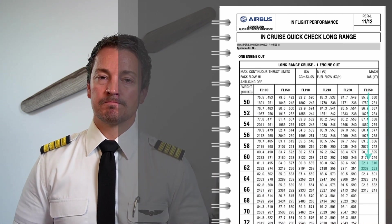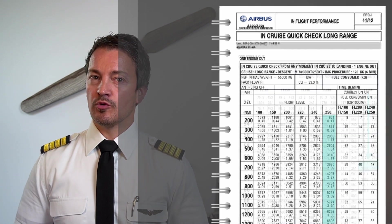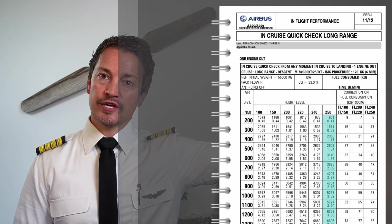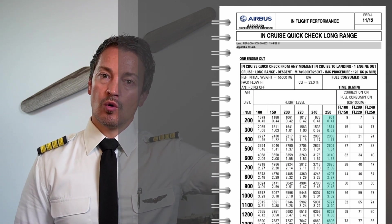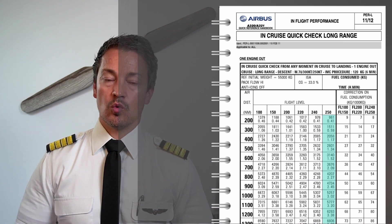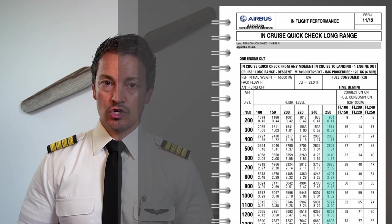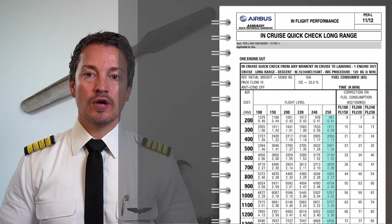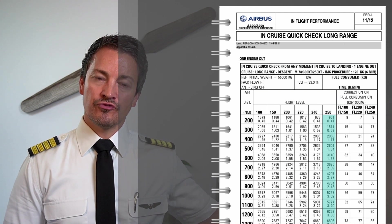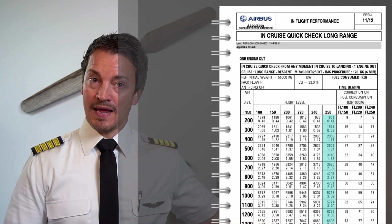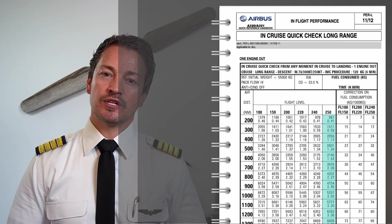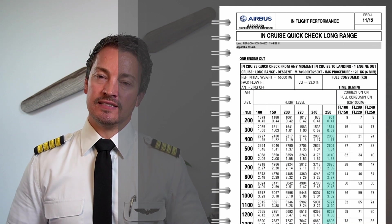Once I know the fuel burn per hour, I can jump to the next table — in-cruise quick check long range, one engine out — which tells me how long I can go with the fuel I have. Take the fuel on board, go to flight level 250, and go down until you find how much fuel you have remaining for the trip. Then go across to the left portion to find your air distance.